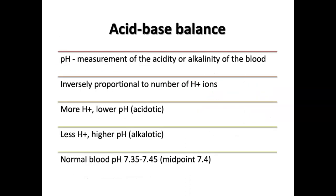Going over acid-base in a little more detail: what is the pH? It's the measurement of the acidity or alkalinity of the blood. It's important to understand that pH is inversely proportional to the number of hydrogen ions. The higher the hydrogen ions, the more acidic the blood is going to be, and you're going to have a lower pH level. The more hydrogen ions, the lower the pH; the fewer hydrogen ions, the higher the pH. Normal pH is between 7.35 and 7.45, with a midpoint of 7.4.